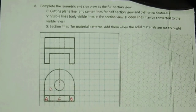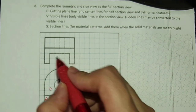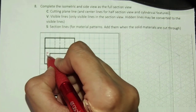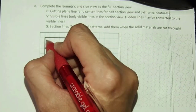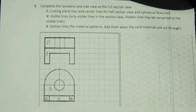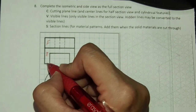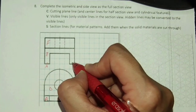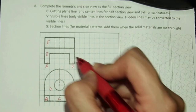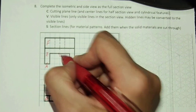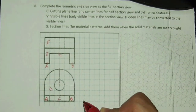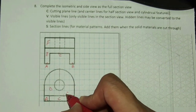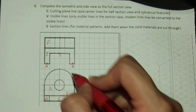Here we're going to use letters to label the visible surfaces in the given orthographic projection. We're going to follow the orthographic projection to draw the isometric view, then draw the regular right side view. From there, we're going to convert the regular right side view to the full section view.